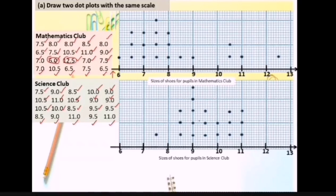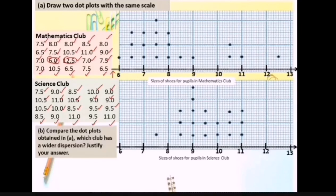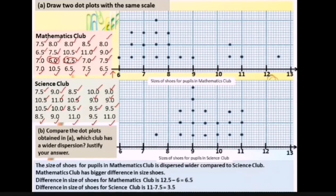From the dot plot you can see most pupils wear shoes with size 9. For part B — comparing the dot plots, which club has a wider dispersion? The size of shoes for pupils in Mathematics Club is dispersed wider compared to Science Club. Mathematics Club has a bigger difference in shoe sizes: 12.5 minus 6 equals 6.5. The difference for Science Club is 11 minus 7.5 equals 3.5.